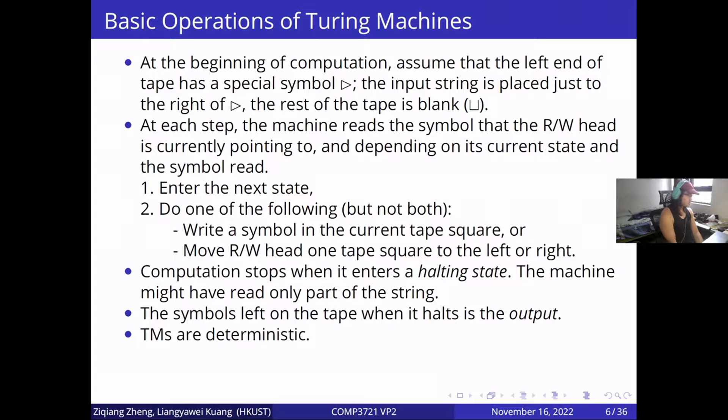For basic operations, Turing machine assumes that the left end of the tape has a special symbol at first. At each step, the machine reads the symbol, and then decides to enter the next state, write a symbol, or move the read head. When it enters a halting state, computation stops.